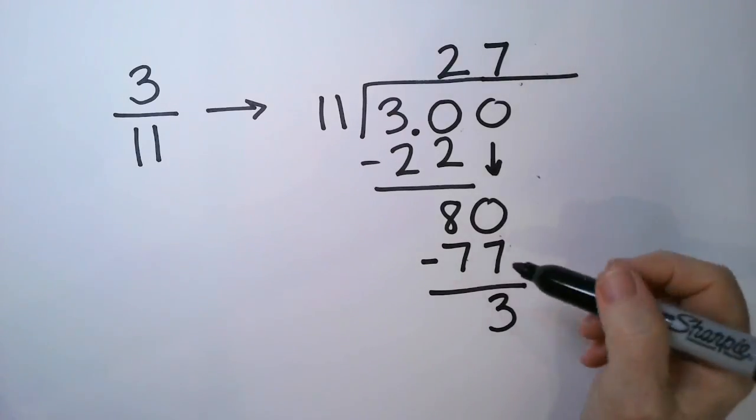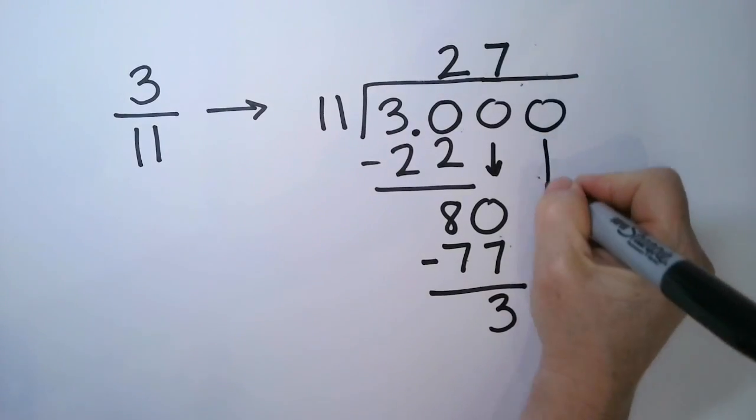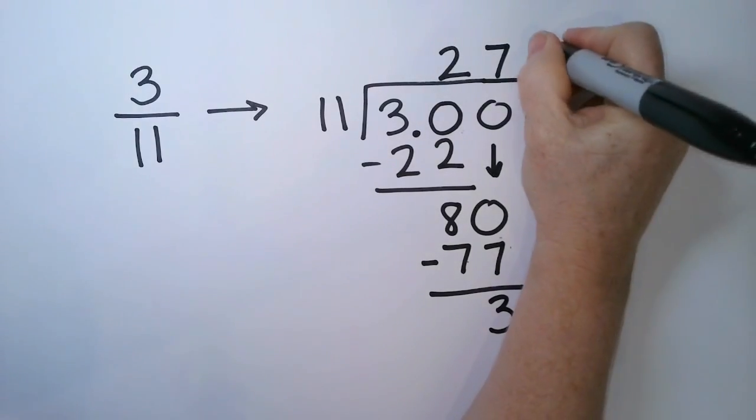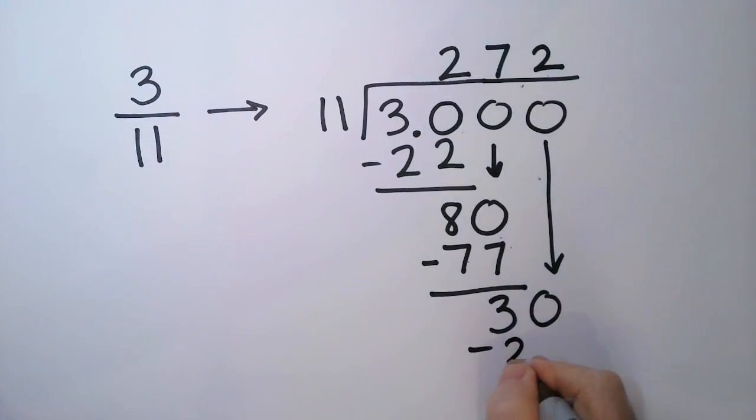And then we have a difference of 3. And then we're going to have one more 0. 11 goes into 30 again, 2 times minus 22.